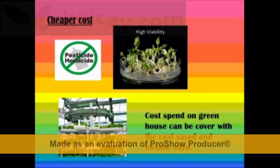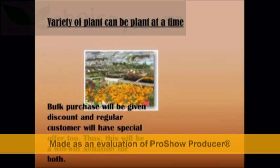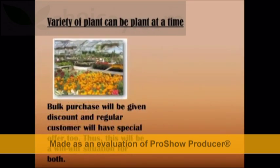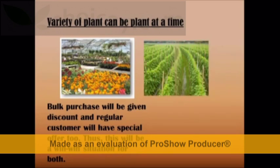Furthermore, the viability of plant growth will be higher and thus more products can be harvested for selling. In addition, it can produce a variety of plants at a time by making partitions in the greenhouse. As a supplier, if there is more variety, buyers can order directly from us without needing to go through other providers. This will create a win-win situation for both parties, as bulk purchases will be given discounts and regular customers will have special offers too.